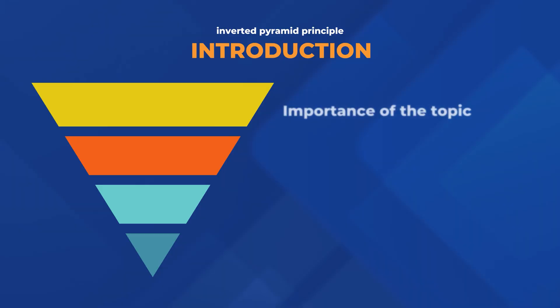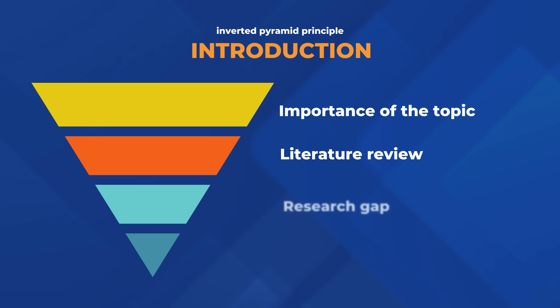An introduction starts with the importance of the topic, which is very broad, then goes into the literature review, which is a bit narrower. Then we've got the research gap, which is narrower still, and then the aim of the paper. So that's the inverted pyramid principle in action in the introduction. That's the first tip you want to implement in order to tell a coherent story.